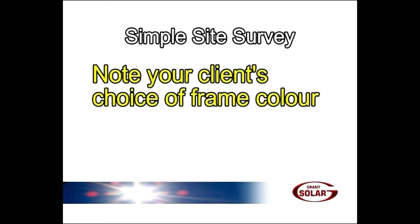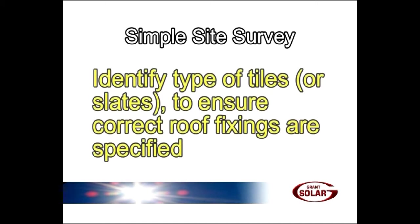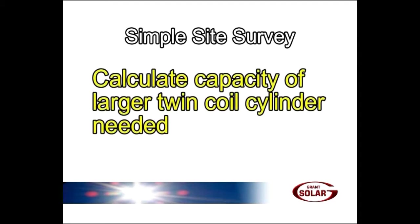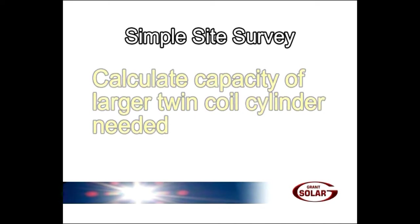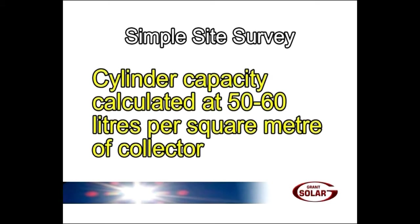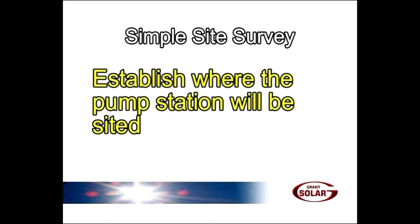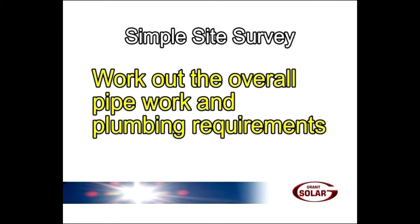And importantly, note your client's choice of frame color. You must also identify the type of tiles or slates to ensure that the correct roof fixings are specified. Calculate the capacity of the larger twin coil cylinder which will be needed. The capacity of the cylinder can be calculated at 50 to 60 liters per square meter of collector. Establish where the pump station will be sited and work out the overall pipe work and plumbing requirements.